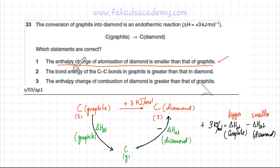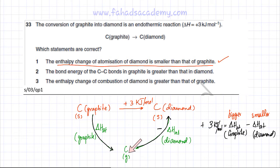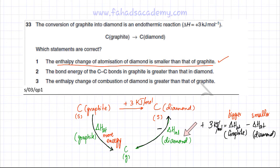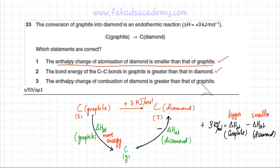The second statement is also related: the bond energy of the C–C bond in graphite is greater than that in diamond. We've already proved that the enthalpy of atomization of graphite is bigger. So to break all the bonds in graphite and form gaseous carbon atoms, you would need more energy — meaning stronger bonds are being broken. The enthalpy of atomization of diamond is smaller because its bonds are weaker. So the bond energy of the C–C bond in graphite is greater than that in diamond, which is also correct.